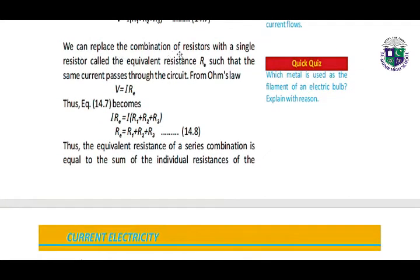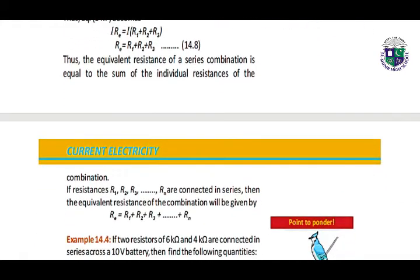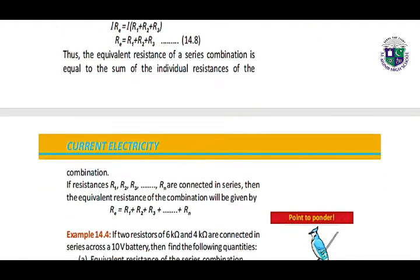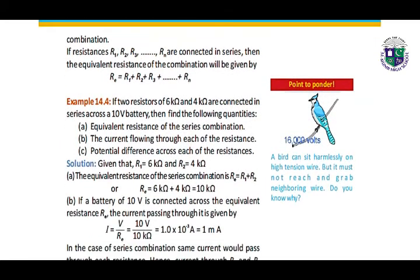We can take I as common and replace the combination of resistors with a single equivalent resistor RE. So V equals I·RE becomes I·RE equals I(R1 plus R2 plus R3). Thus, the equivalent resistance of a series combination is equal to the sum of the individual resistances of the combination.